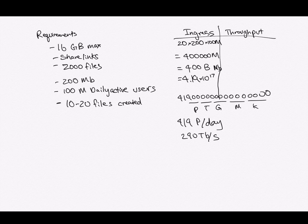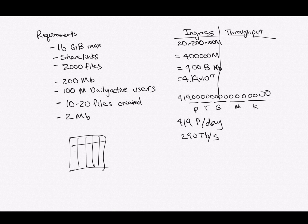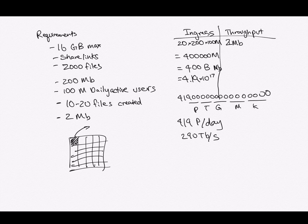Now we need to calculate the throughput. An interesting aspect of this is that we're going to take some file system fundamentals and model our file based on the Linux file system. We can break up a large file into smaller chunks, and the average chunk size can be around 2 megabytes. This makes uploading easier and helps distribute the load. If we just have one server uploading the entire file, we'd run into a lot of memory issues, especially with larger files — there's no way we'd have 16 gigabytes of RAM available cheaply.